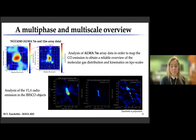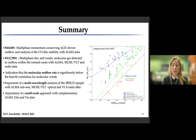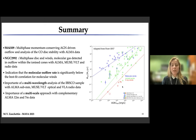To conclude, in this presentation I showed results about the two Seyferts Markarian 509 and NGC 2992, for which a multiphase analysis was performed. What we found is that in these objects there is an indication that the molecular outflow rate is significantly below the best-fit correlation found for molecular winds by Fiore et al. 2017. The graph shows the relation from that work, alongside plots for these two objects and ESO 428 from Fiore et al. 2020. This highlights the necessity of analyzing ALMA data over the whole IBISCO sample, to understand whether this trend is seen in other objects as well.